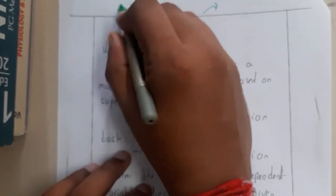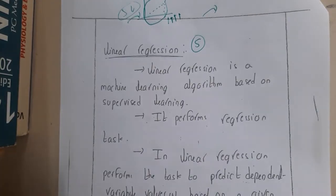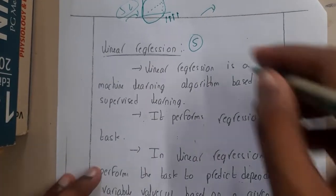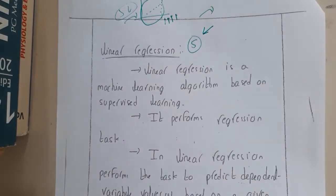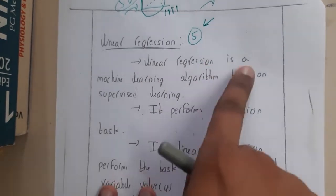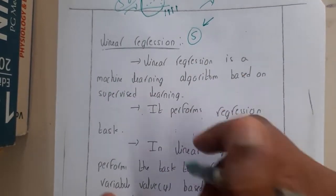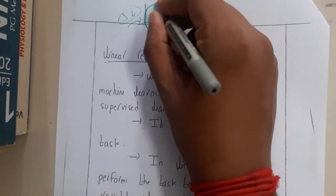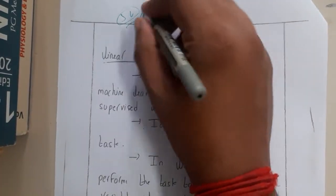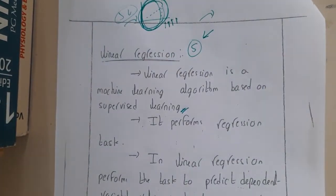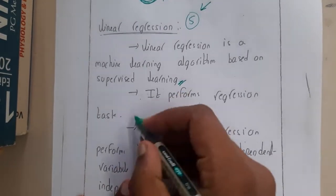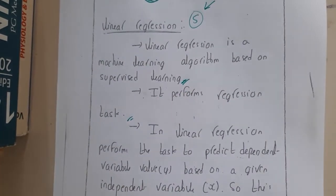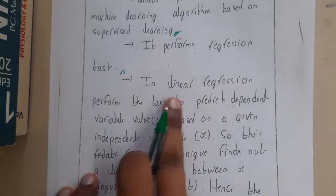We'll be taking an example in the next lecture, so don't worry. Linear regression is a machine learning algorithm based on supervised learning because you are giving the input - a series of inputs. It performs the regression task, which is basically prediction in simple words.